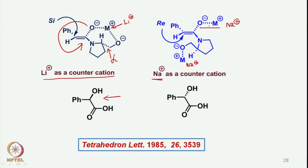When sodium is used as the counter cation, sodium is not as effective at chelating as lithium. The anion is more separated, causing dipole-dipole repulsion between the two anions. Unlike the lithium case — where coordination to both oxygens is possible — there is no such coordination with sodium. Therefore, due to this dipole repulsion, the auxiliary turns so that this part becomes beta-oriented, and the nucleophile attacks from the lower alpha side.